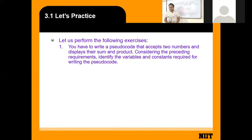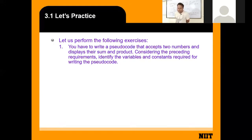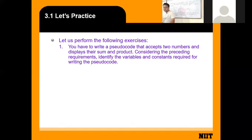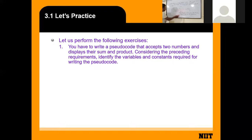Let us perform the following exercise: write a pseudocode that accepts two numbers and displays their sum and product. Considering the preceding requirement, identify the variables and constants required for writing the pseudocode.